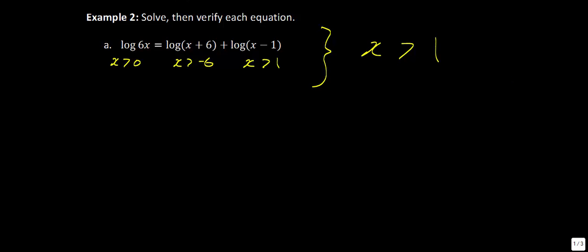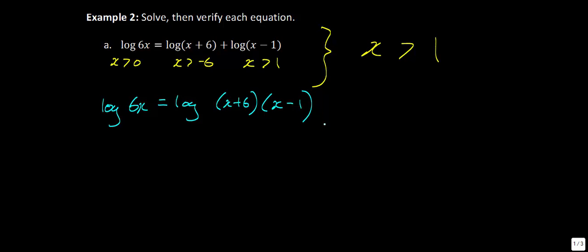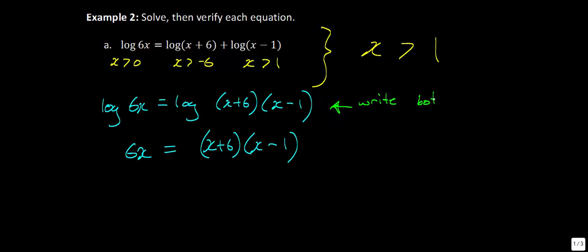Now using our laws of logarithms: on the right-hand side we are adding logs together, so we can use the product law to write this as log of (x + 6)(x − 1). Next, I'm going to write both sides as exponents of 10 — essentially getting rid of the logs on both sides — so we now have 6x equal to (x + 6)(x − 1).